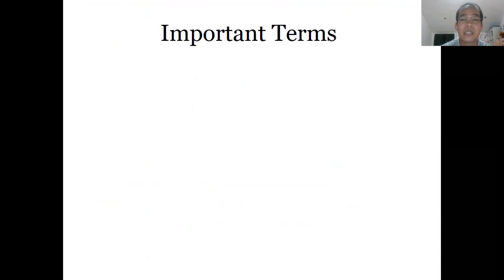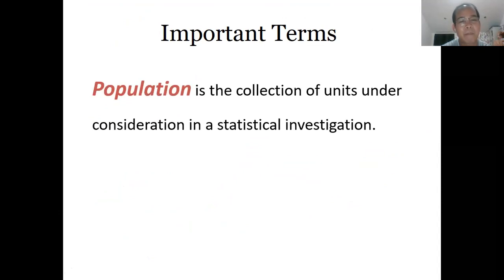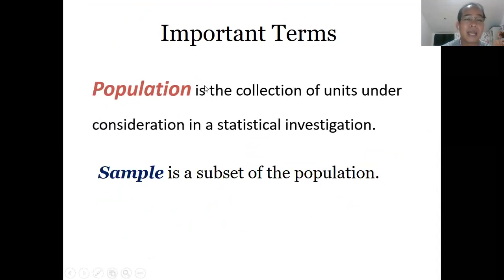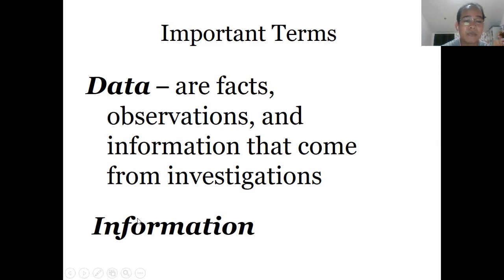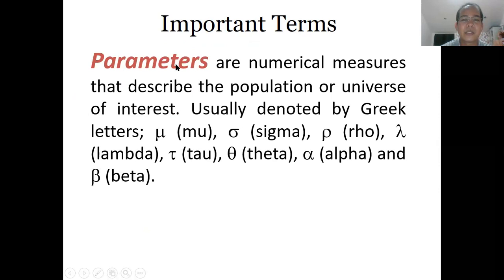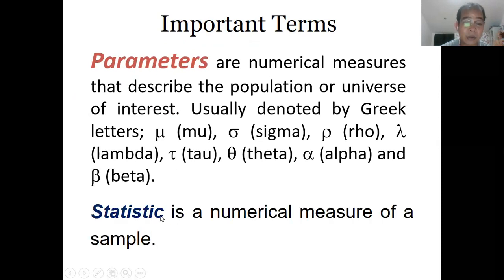Let's have some important terms in dealing with statistics. Population is the totality, and sample is part of the population or a subset of the population. We also have data and information — remember, not all data can immediately be considered as information; the data has to be properly processed so it will become information. Another important term is parameters — these are numerical measures that describe the population or universe. And then we have statistic (with an 's' it is already the subject) — it is a numerical measure of the sample. Describing the characteristics of the sample, the result is known as a statistic.